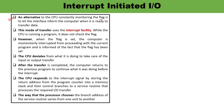This drawback can be overcome in Interrupt Initiated I/O. In this particular mode of transfer, the CPU need not check the flag status. Whenever the devices are ready, they are going to issue an interrupt signal. Based on that interrupt, the CPU will stop the execution of the current program and execute the required task. After the completion of the interrupt request, it will switch back to the main program and execute it.